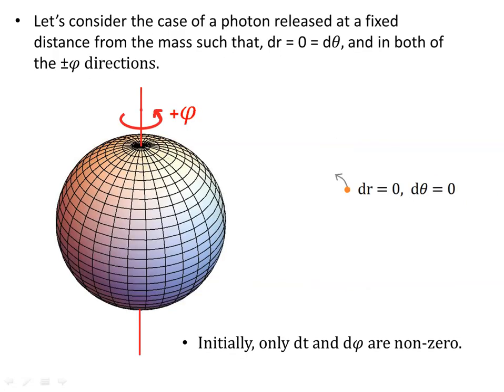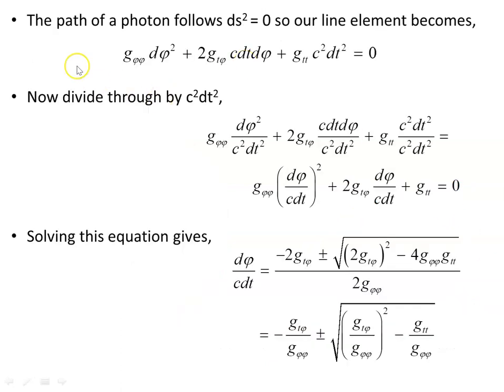Now let's consider the case of a photon released at a fixed distance from the rotating mass such that dr = 0 and dθ = 0. It is fixed in both the plus and minus φ direction. We release this photon in the same direction as the mass is rotating, and also attempt to release it in the direction against the rotation — the counter-rotation direction — to see what happens. Initially, only dt and dφ are non-zero.